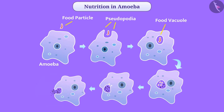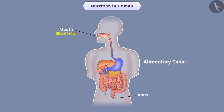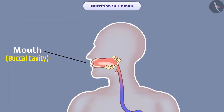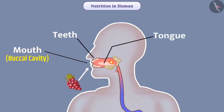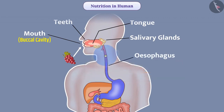Let us now see how the process of nutrition takes place in humans. In humans, there is an extended long tube from mouth to the anus called the alimentary canal. The first part of the alimentary canal is the mouth. In the mouth, food is chewed by teeth and converted into small particles. During chewing, the muscular tongue mixes food with saliva secreted from the salivary glands. Saliva wets the food, making it easier to move down. Saliva contains an enzyme called salivary amylase, which breaks the complex molecule starch into simple sugar. After this, the esophagus passes the food from the mouth to the stomach.